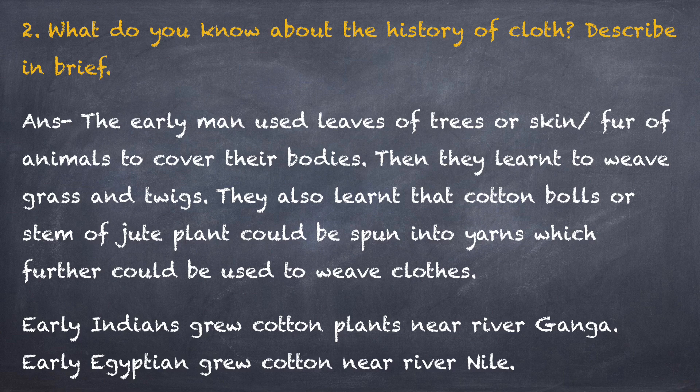Question number two: what do you know about the history of cloth? Describe in brief. Early men used leaves of trees or skin and fur of animals to cover their bodies. Then they learned to weave grass and twigs together to form baskets and mats. They also learned that cotton balls or stem of jute plant could be spun into yarns, which further could be used to weave clothes. Early Indians grew cotton plants near river Ganga and early Egyptians grew cotton near river Nile.